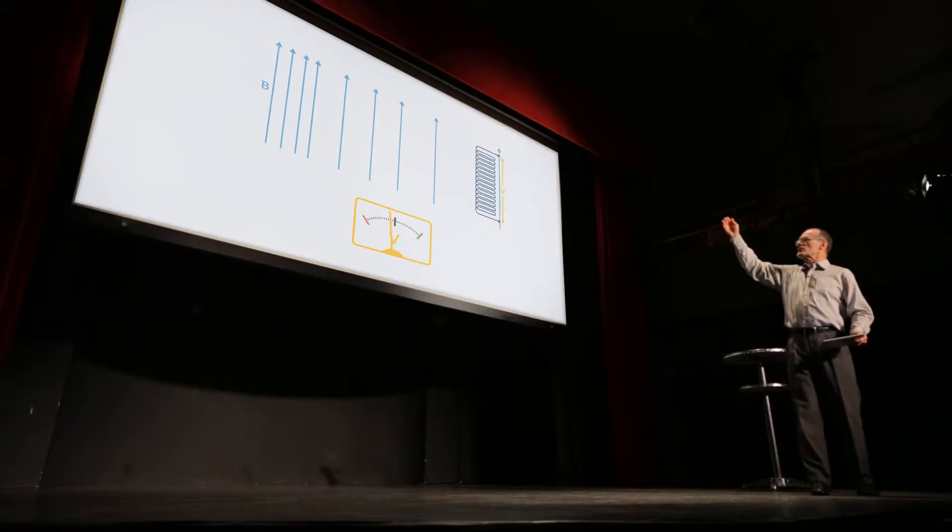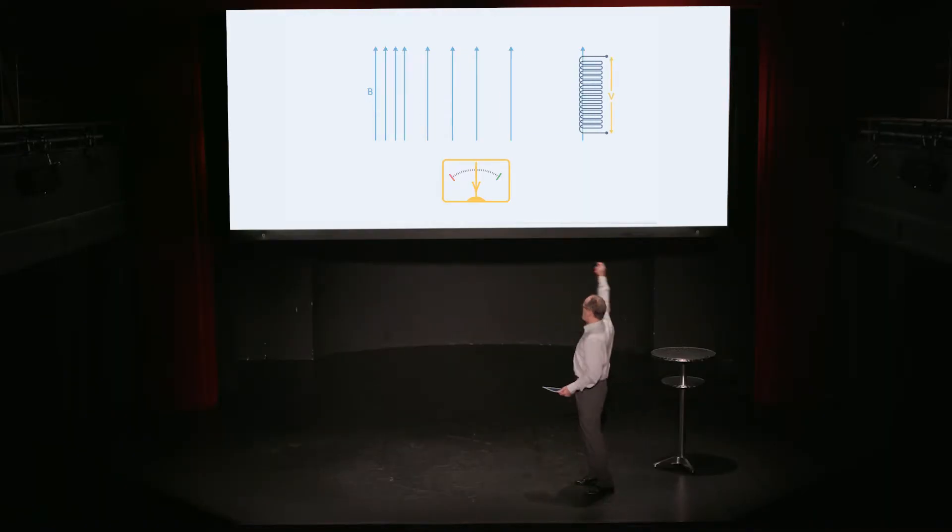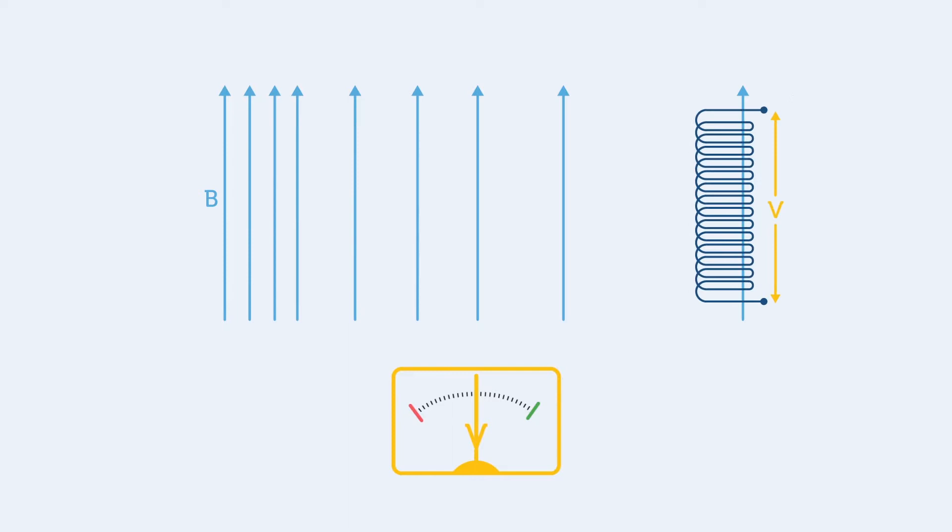And we integrate that flux to find the total change over the whole path. Now, an interesting point is, it doesn't matter which path I could take. I could move directly, or I could take a couple of detours. I will end up with the same answer, which is a pretty remarkable statement.